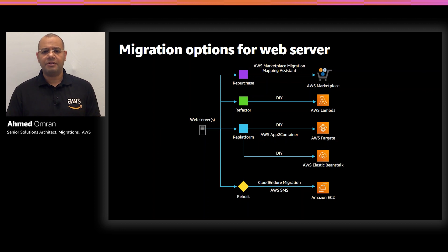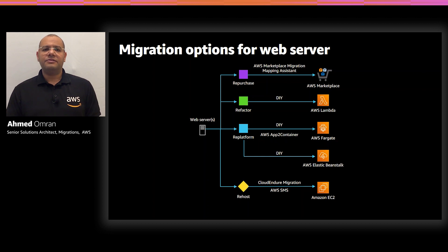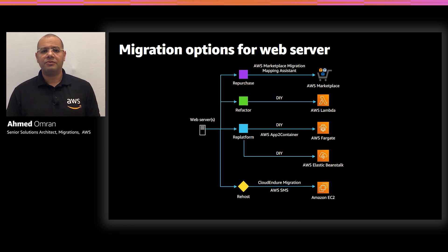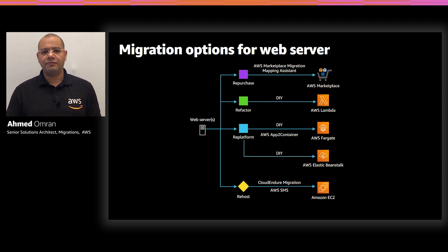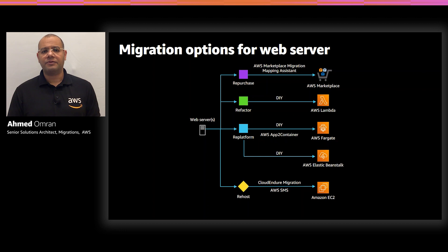The third option is refactor, where you take full advantage of cloud native services, such as AWS Lambda and Amazon API Gateway, to build a serverless architecture and improve agility, performance, and scalability. On top of the slide, you see the Repurchase option — moving from the traditional web server to a software as a service product from AWS Marketplace and just migrate your data. AWS provides you with a mapping assistant tool to find the appropriate marketplace product for your application. There are many options to choose from. There is no right or wrong in which path to choose, but it depends on how much effort, time, and cost you need to spend, and of course the business driver.